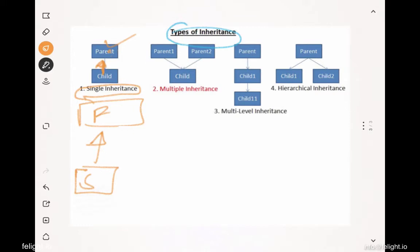Now let's look at multi-level inheritance. Here, a grandfather is inherited by father, and father is inherited by son. This is called multi-level inheritance, and it is essentially an extended version of single inheritance.